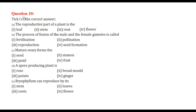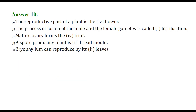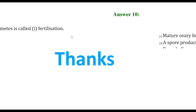Multiple choice answers: the reproductive part of a plant is a flower. The process of fusion of male and female gametes is called fertilization. The mature ovary forms a fruit. The spore-producing plant is bread mold. Bryophyllum can reproduce by its leaves.